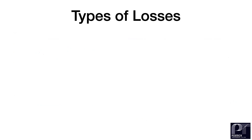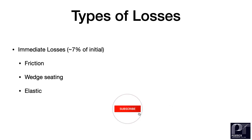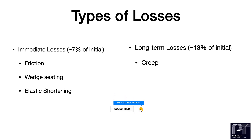Losses comprise immediate and long-term losses. Immediate losses are caused by friction, wedge seating, and elastic shortening. Long-term losses are caused by creep and shrinkage of concrete and strand relaxation.